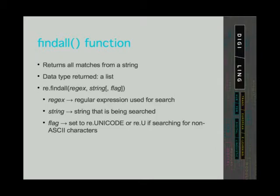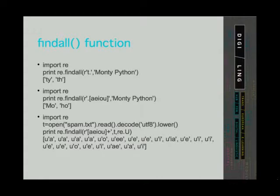We have already mentioned the difference between strings and Unicode data types. This flag helps us use regular expression operations on Unicode data types. Before we look at a few examples, let's revise some symbols in regular expressions. Remember that a period matches any character except a new line. An asterisk or star matches zero or more repetitions of a character or a set of characters. A plus matches one or more repetitions. A question mark matches zero or one character or set of characters. Sets of characters are indicated by square brackets.